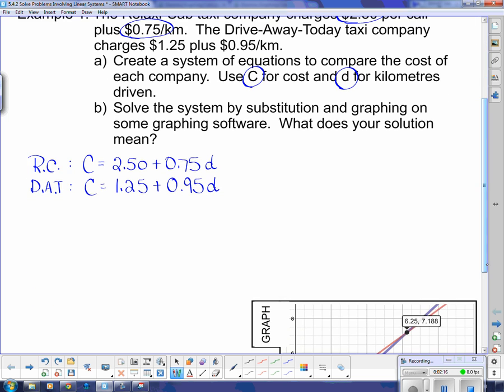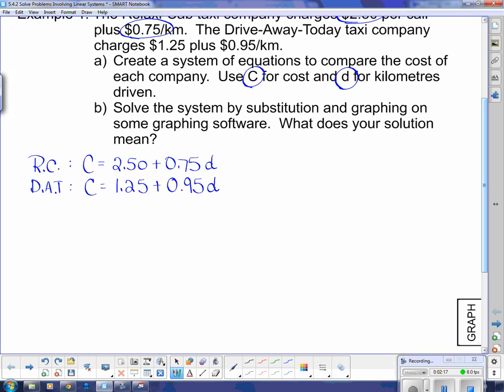And it asks us to solve them. In Part B it says solve the system by substitution. So I'm going to solve it by substitution. I'm going to call this one equation one and this one equation two. Now what I'm going to do is take this. This tells me that c is $1.25 plus $0.95d. So I'm going to put it in for that c in equation one.